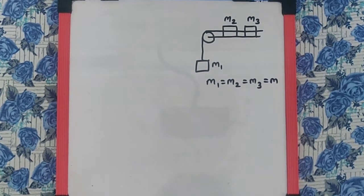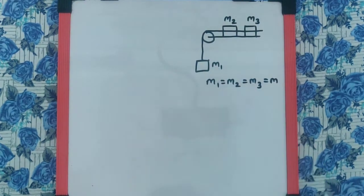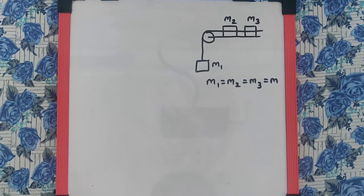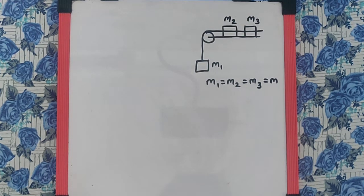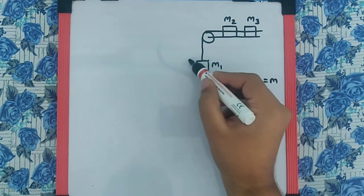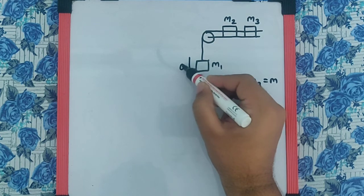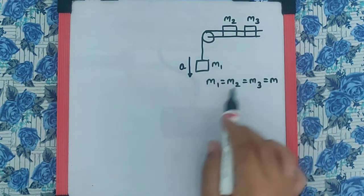The next question says a system consists of three masses M1, M2, and M3, where all three are equal, connected by a string passing over a pulley P. The mass M1 hangs freely and M2 and M3 are on a rough horizontal table where the coefficient of friction is mu. The pulley is frictionless and of negligible mass. We are supposed to find the downward acceleration A of mass M1, and this is the diagram given in the question.